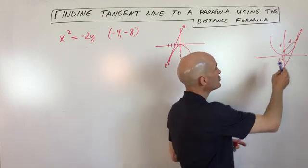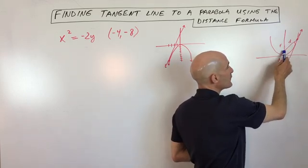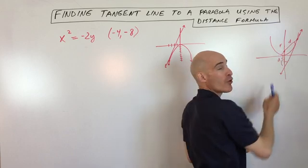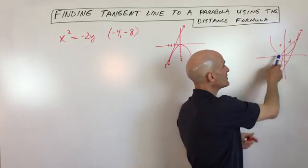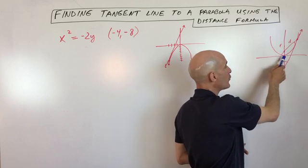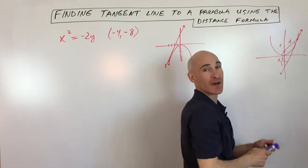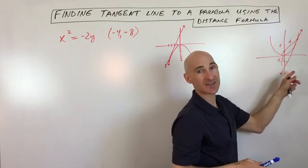And what you want to notice or pay attention to is that the distance from the focus of the parabola to the point where the tangent line touches the parabola, that distance is going to be the same distance as from the focus to the y-intercept that the tangent line makes with the y-axis.